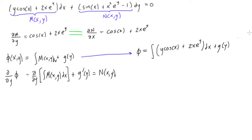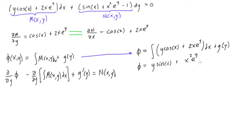Remember, this is all equal to c, but we'll get back to that later. So φ is equal to — the integral with respect to x of y cos x is y sine x. For the next term, x squared times a half, but the two cancels out, so we get x squared times e to the y, plus the function g of y.